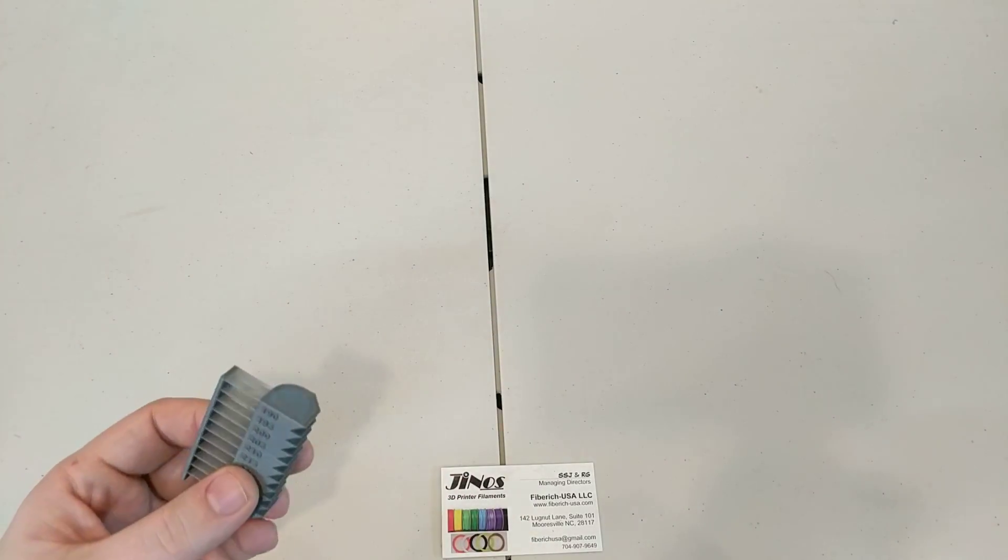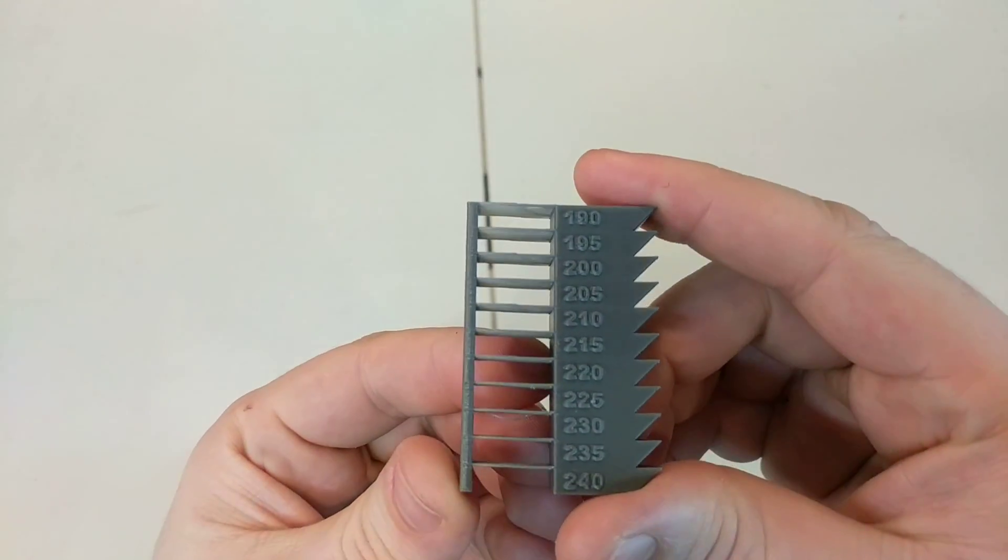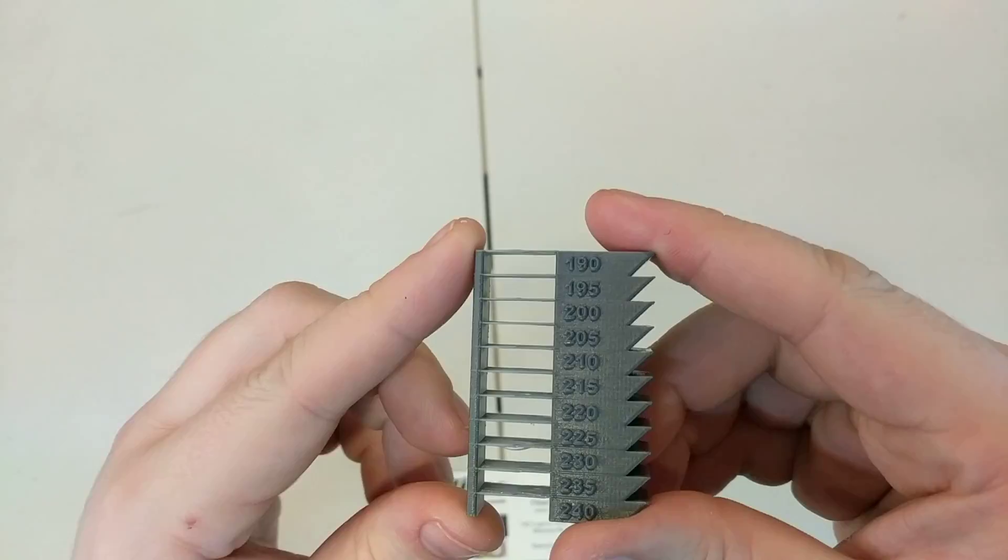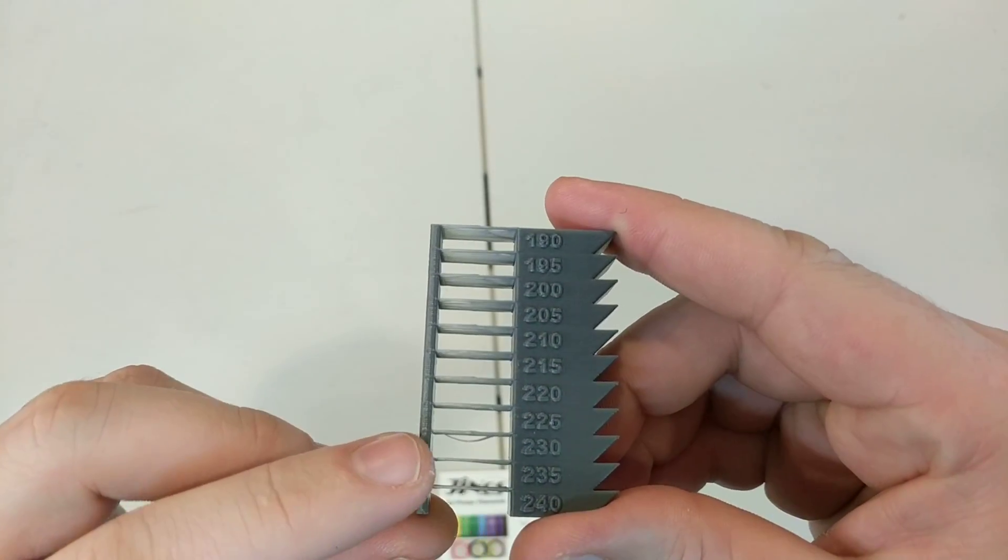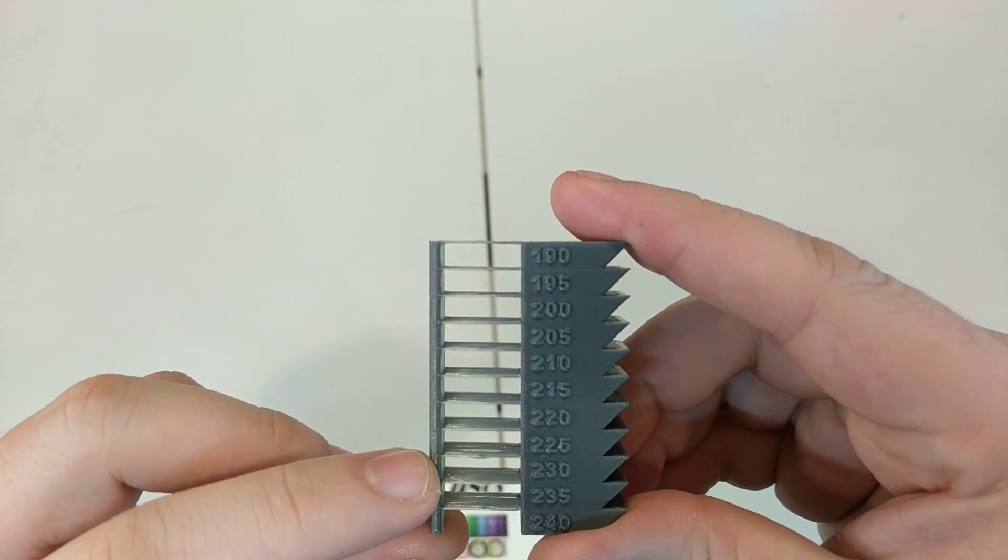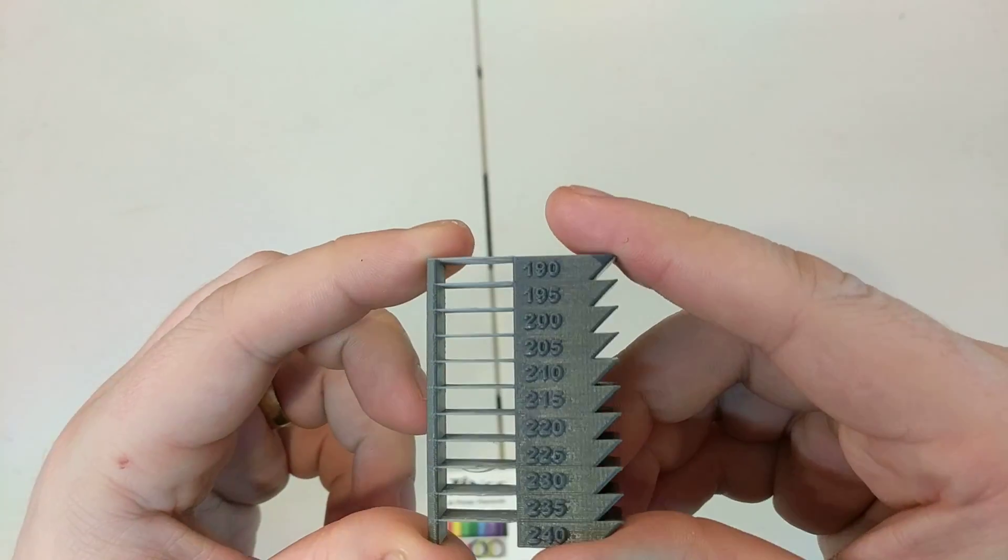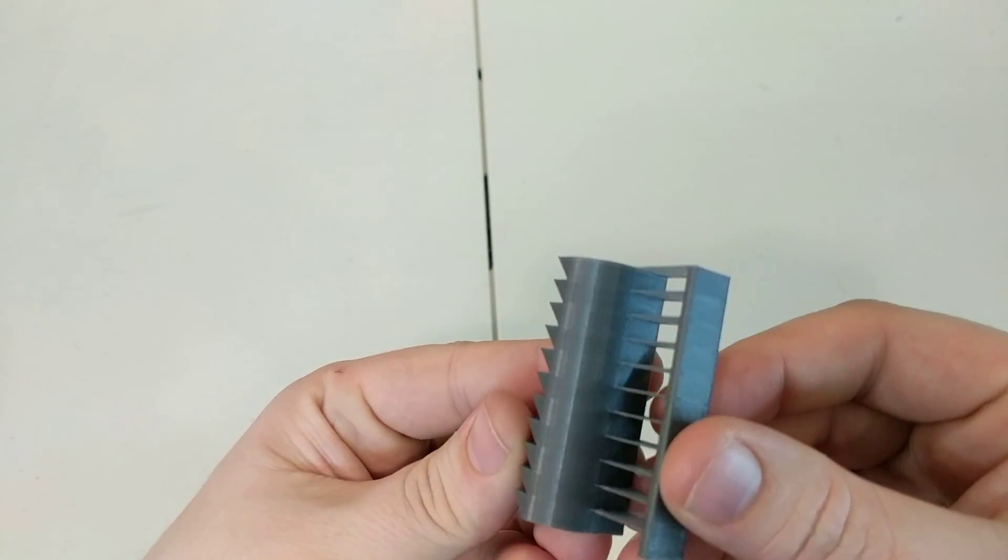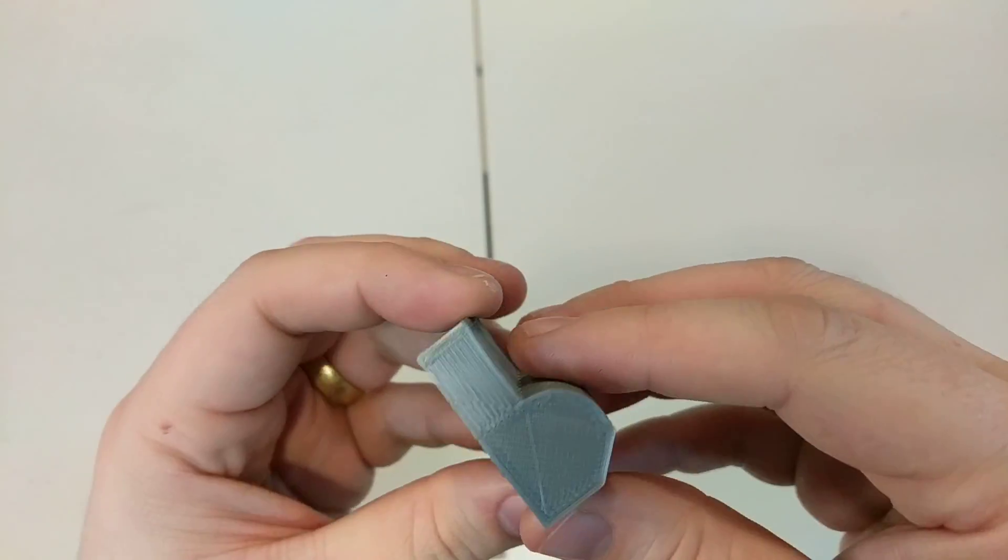Starting with basic calibrations. So temperature tower is good. Quality is pretty good, even all the way up to 190. It only had this one little dip down here at 230. But otherwise, it's been pretty forgiving. And no difference whatsoever on the back of the tower at all. So across the temperature range, it's quite good.